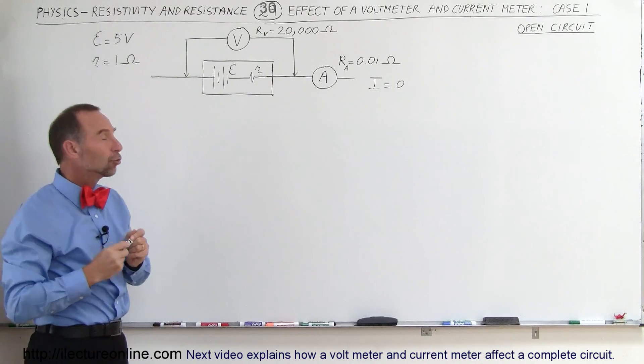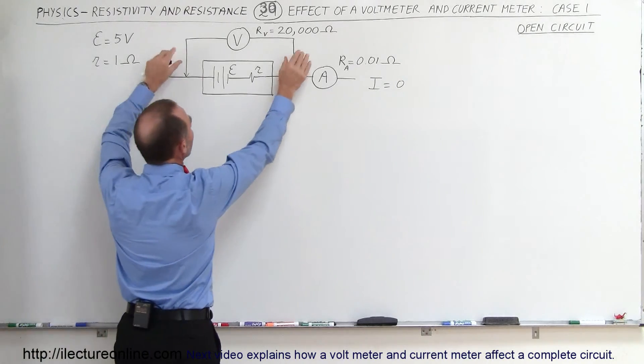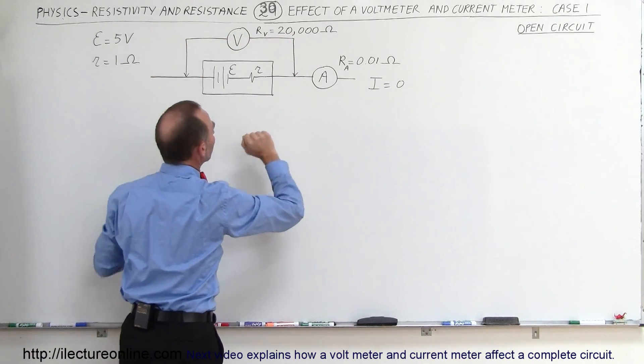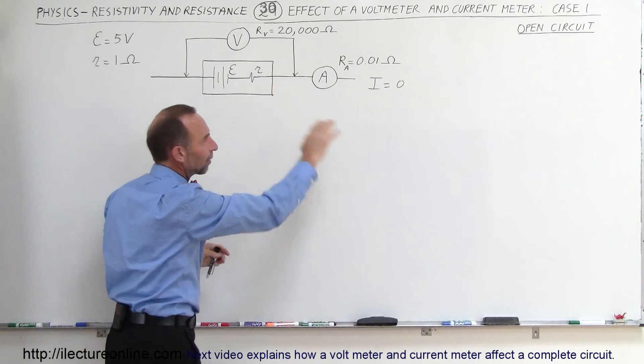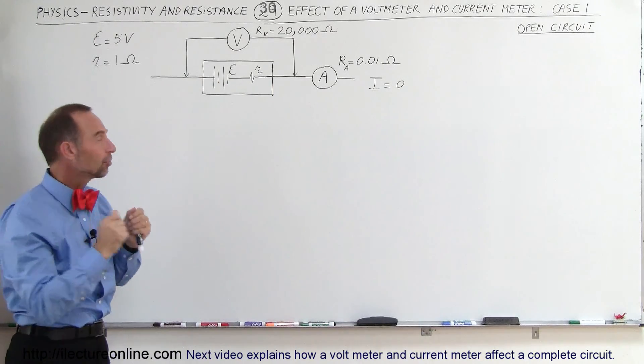Now, is that completely true? If we don't have the voltmeter attached, if we assume for a moment the voltmeter is gone, then yes, you can say there's absolutely no current. But once you attach a voltmeter, you actually provide a complete circuit.